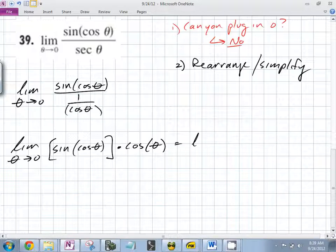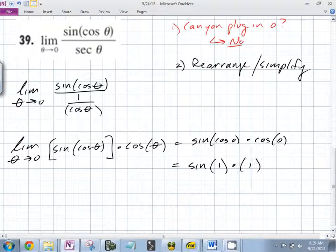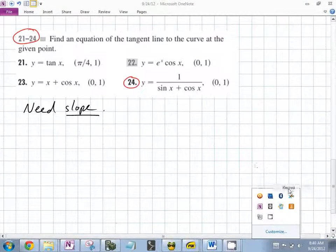You can just plug in this. You end up with sine of... This is the trickiest part. Times cosine of zero. What's cosine of zero? One. Cosine of one. So what does this equal? Sine of one. Done. That's it. All they wanted you to do was rearrange this. By far the trickiest part is remembering your trig value.